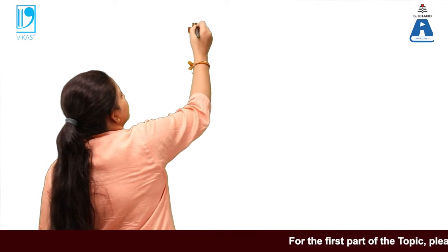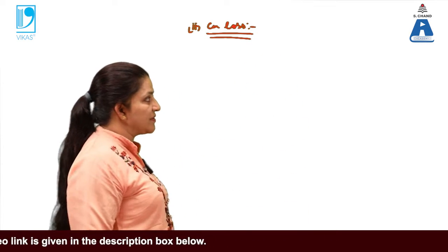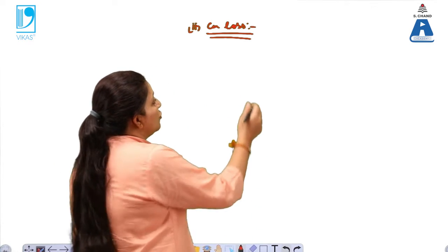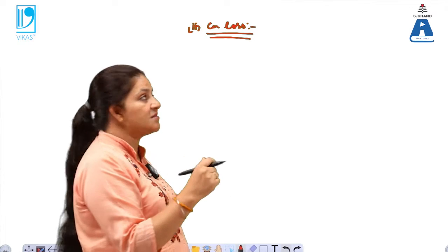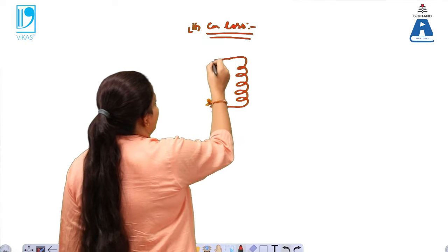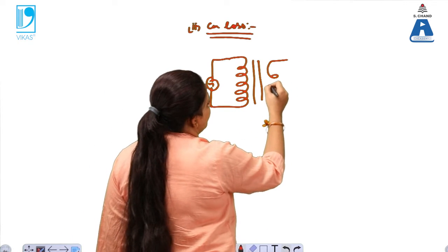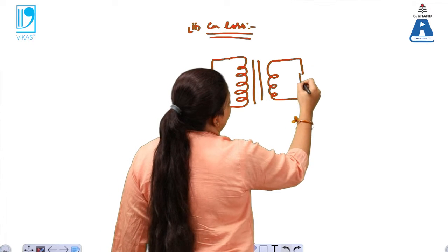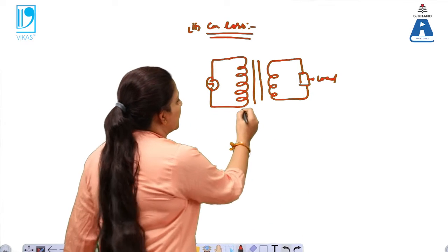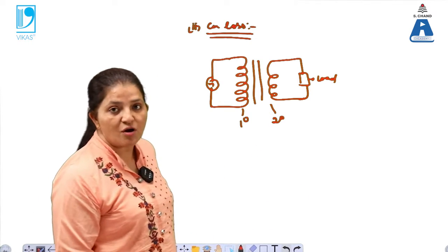The second kind of loss is the copper loss in a transformer. Iron losses are basically due to the presence of iron or the core, while copper losses are due to the windings in the primary and the secondary part. In the primary part there is a primary winding, and in a short representation of a transformer there is also a load at the output. This is the primary winding and this is the secondary winding.